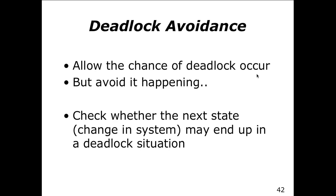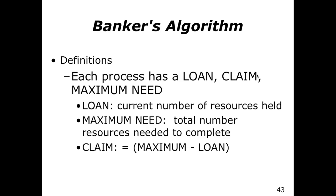Deadlock avoidance, as another technique, allows the chance of deadlock but avoids it through overall design. You can check whether the next state change in the system may lead to a deadlock and then not allow it. The more checking you're doing, the more overhead you add to the system and the slower it's going to perform.